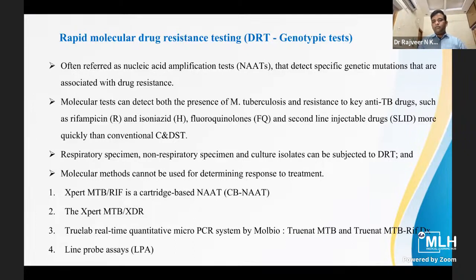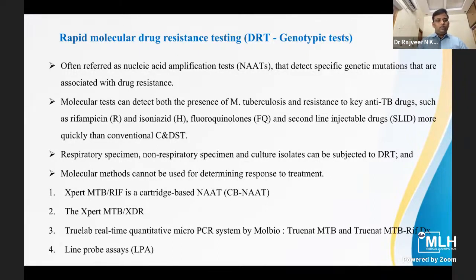Rapid molecular drug-resistant testing is often referred to as nucleic acid amplification test (NAAT), which detects specific genetic mutations associated with drug resistance. It is a molecular test that can detect both the presence of Mycobacterium tuberculosis and resistance to key anti-TB drugs such as Rifampicin, Isoniazid, fluoroquinolones and second-line injectable drugs. Results are obtained more quickly than conventional culture and DST. Specimens can be respiratory, non-respiratory, or culture isolates. There are four types of molecular methods: CBNAAT, EXPERT MTB-XDR, TrueNAT, and Line Probe Assay.